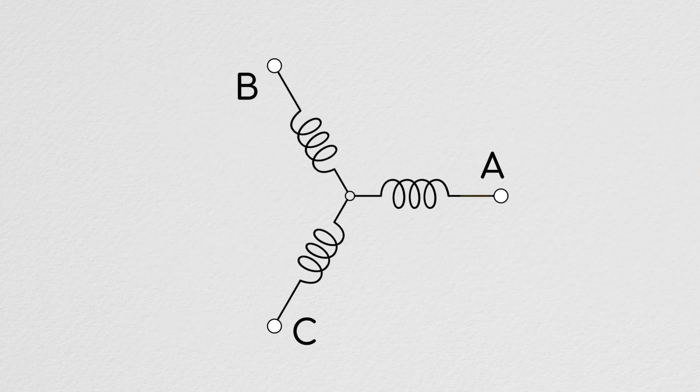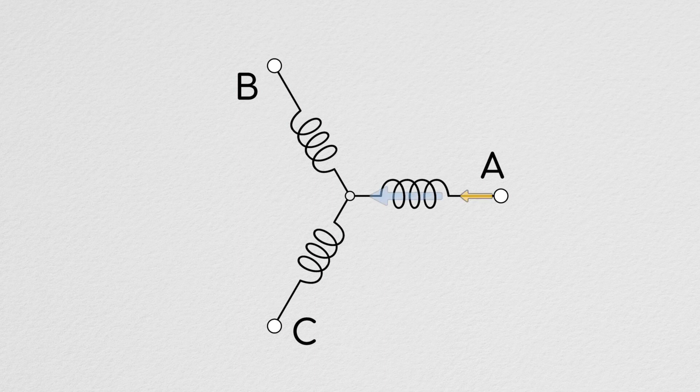Now, with this new notation, a current into phase A will correspond to both a current vector and a magnetic field vector strictly to the left. A current into B will produce vectors 60 degrees south of east, and C will be 60 degrees north of east. So, now that we've adopted this more standard depiction of the diagram, let's take a second to think about it.